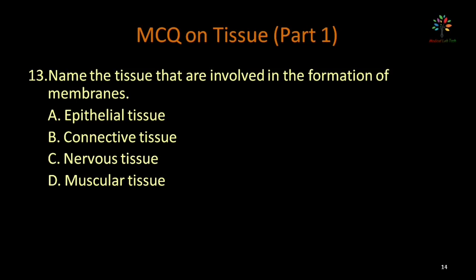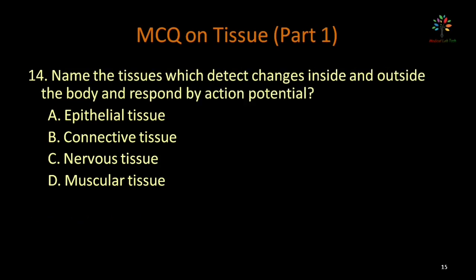Name the tissue involved in the formation of membranes — options: epithelial tissue, connective tissue, nervous tissue, muscular tissue. Epithelial tissue plays the main role in the formation of membranes and lining epithelium. Correct option is epithelial tissue.